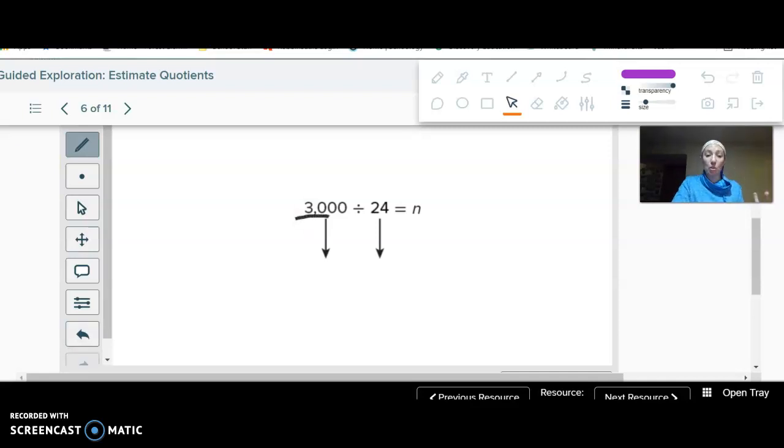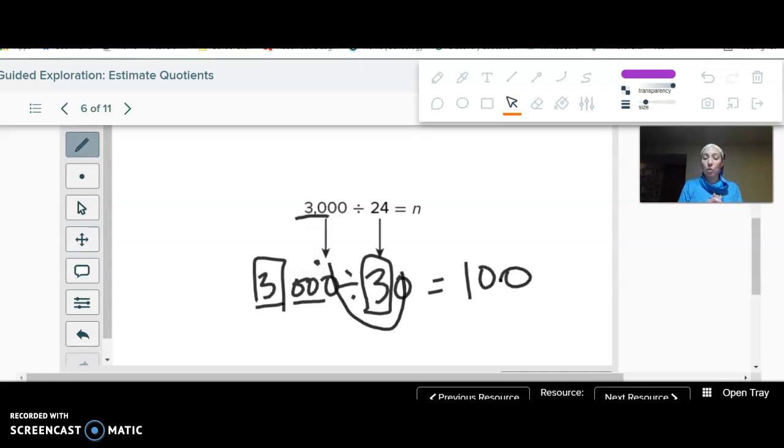Well, I can say, oh, 24 is close to 30, and I can do 3,000 divided by 30, right? That's pretty simple. Well, in this case, I can even just do 3 divided by 3 is 1. Cancel out a zero. I have two zeros left. So it's about 100. So 24 doesn't officially round to 30, but using special rounding, because it goes with 3,000 so nicely, that's why I use it. It's called a compatible number. They go well together.